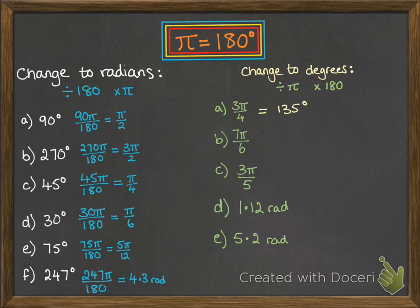Same with the next one. Divide by π, and then times by 180, so we're looking for 7 sixths of 180, which is 210 degrees. Next, 3 fifths of 180, 108 degrees.